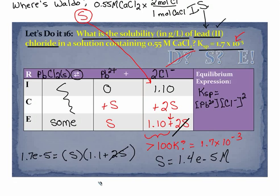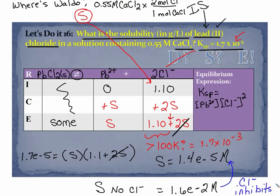Now, I did a calculation, a real quick calculation, and the solubility with no chloride ion present was equal to 1.6 times 10⁻² molar. So I hope you can see, and again, this gets at the understanding of the underlying concepts, the presence of the chloride ion inhibited the solubility of the salt.